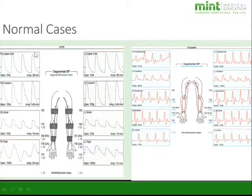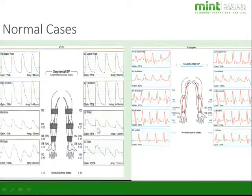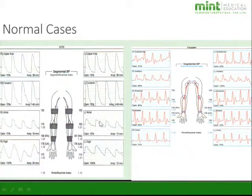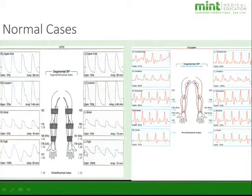Here are a couple of cases. This first PVR case shows a sharp upstroke and notch — just like in the lower extremities. There is a slight decrease in amplitude on one side, but it still has the upstroke and notch, likely due to cuff size. The wrist brachial indices are 1.0, 1.1, 1.2, and 1.1 on both sides — so that one is normal.